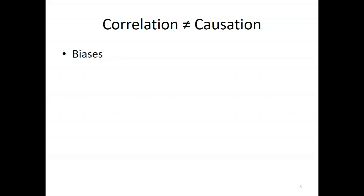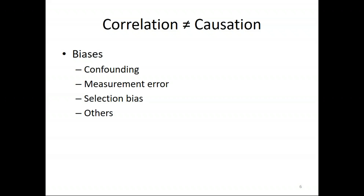People are not cell cultures or lab rats — you can't just change one thing for a person. People who are different in one way are not different in just that one way; there are patterns that go together. We have several types of bias we talk about as epidemiologists. I'm going to focus mostly on two: confounding and selection bias. But there's also measurement error and other things that can go wrong.